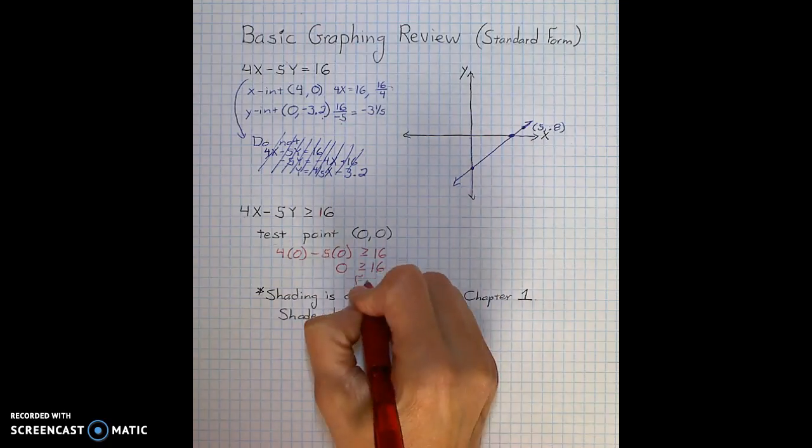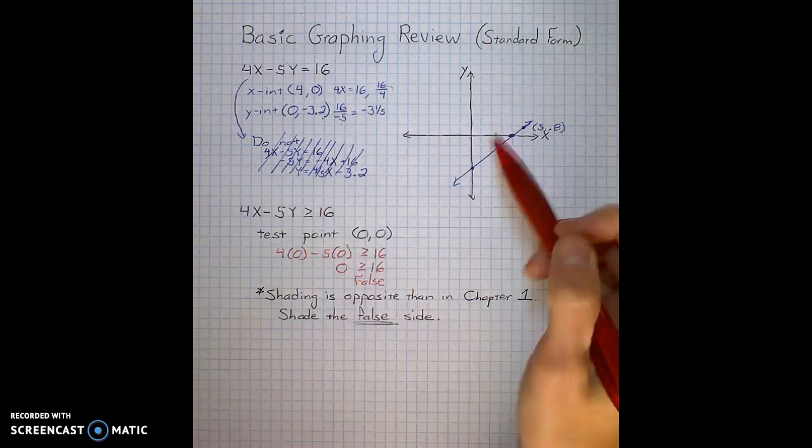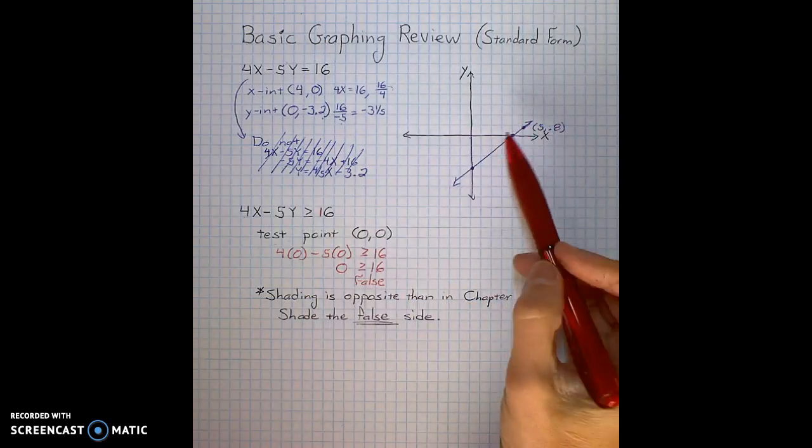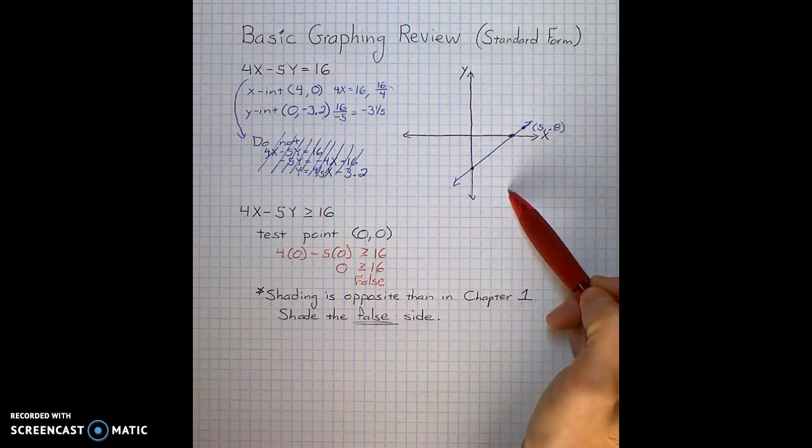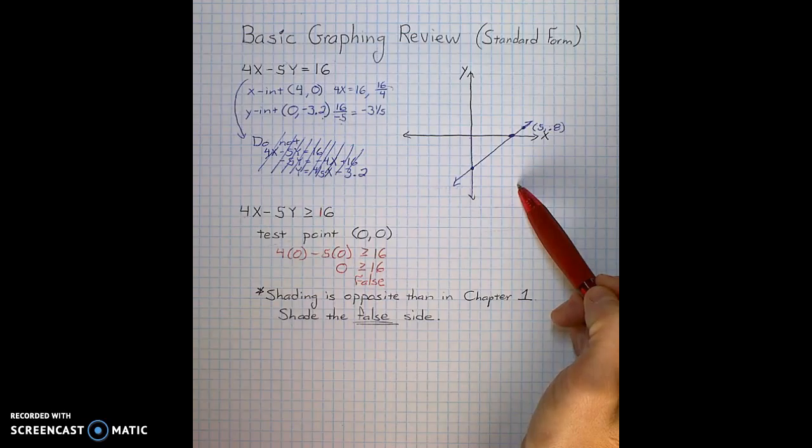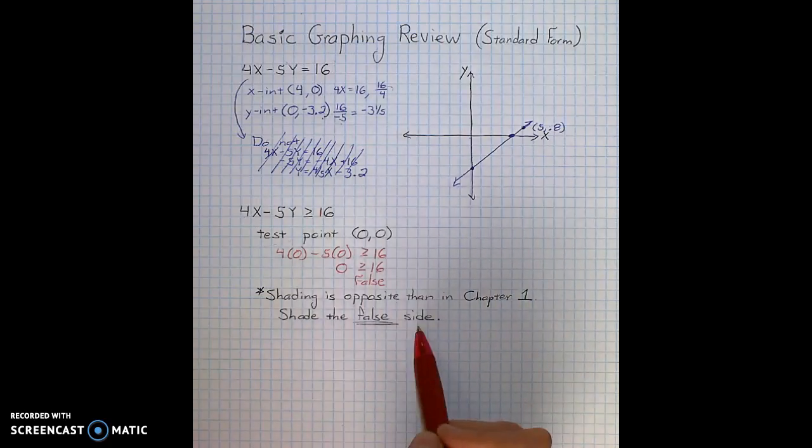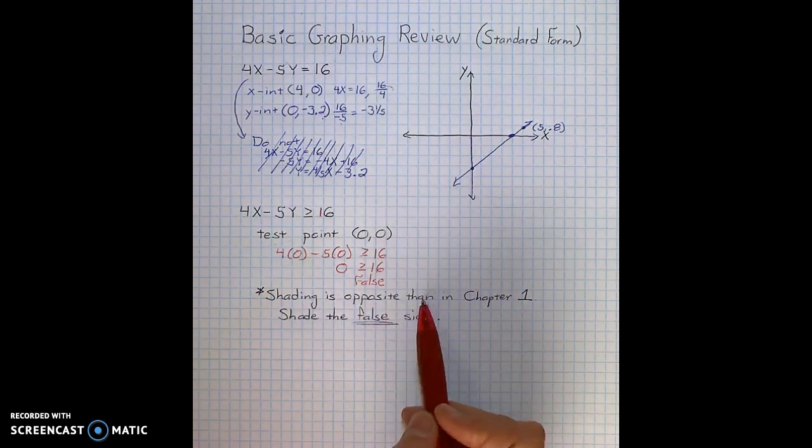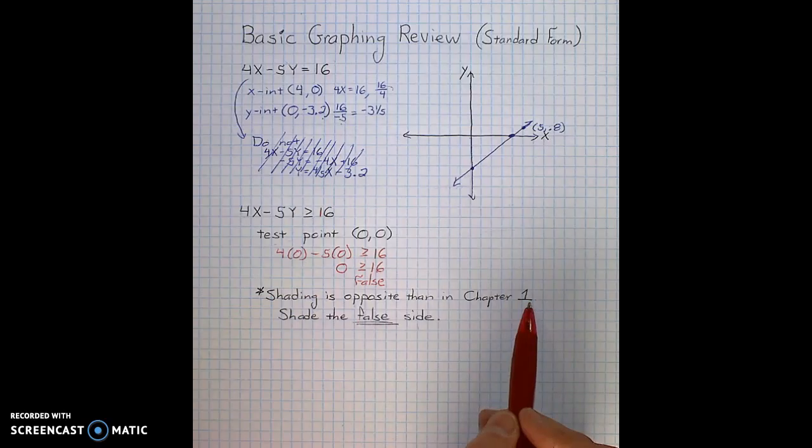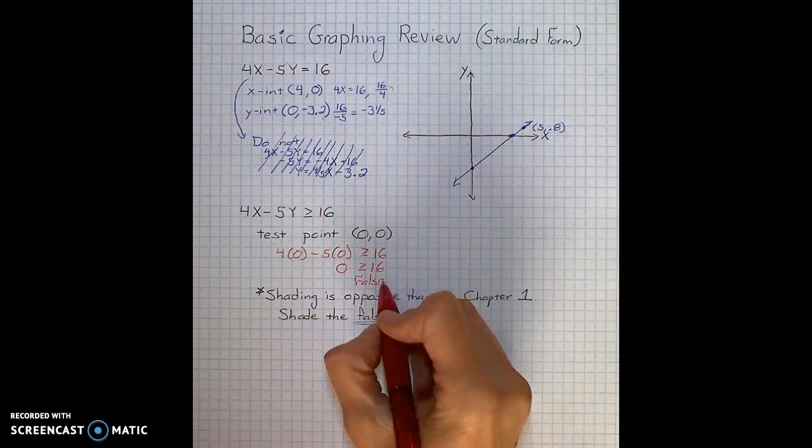That is false, which means back in chapter 1, I would have shaded where the true side would have been. In chapter 3, we will do the exact opposite. We are going to shade the false side. It won't become apparent until we do some complex problems for why we do that. So shading is opposite than that in chapter 1. We are going to shade the false side.